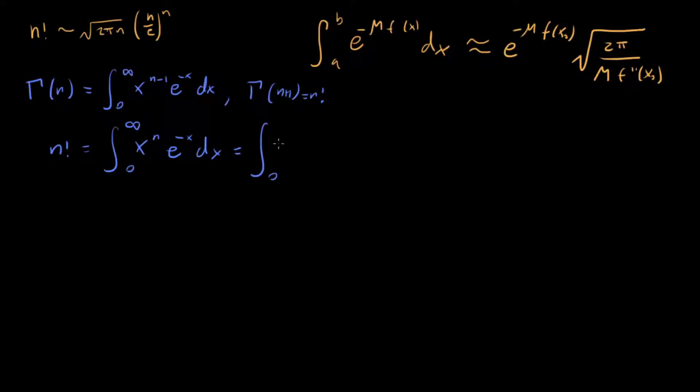And so I'm going to do that by rewriting this x to the n as e to the log x n. And if we do that, what we get is that this is e to the log x n minus x dx.